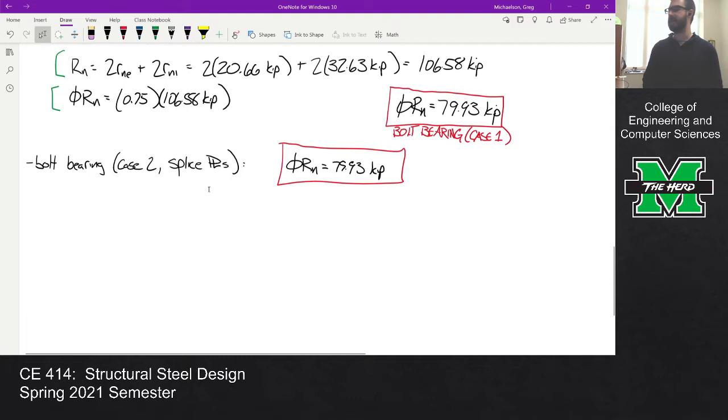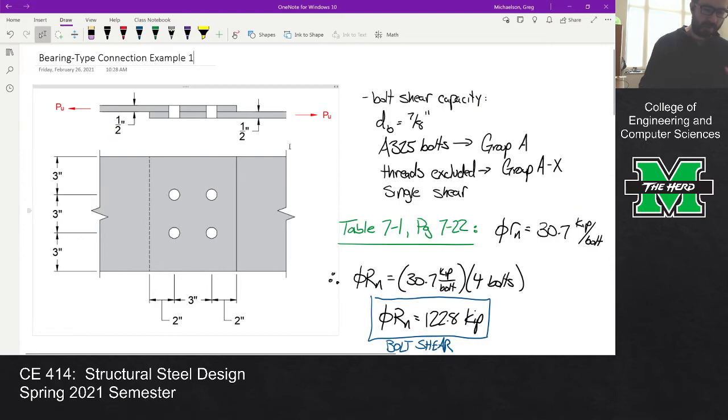That's basically the bolt bearing calc in a nutshell. The one thing that I didn't do here was the connection layout parameters, which I'm not going to go through that here. The connection layout requirements I'm not going to do here, but they're no different than what we did in class last time.